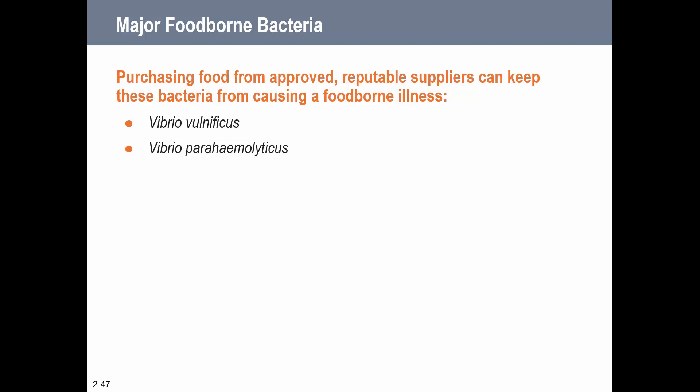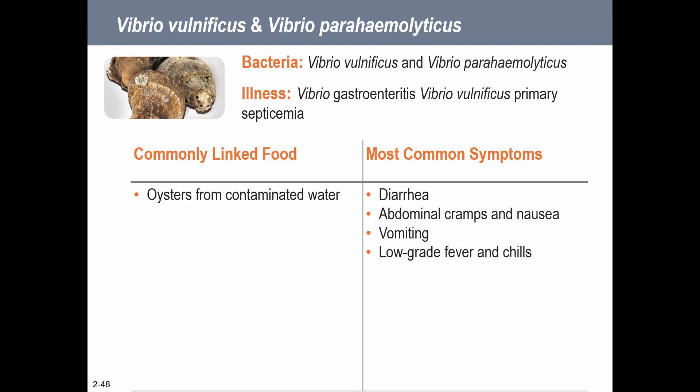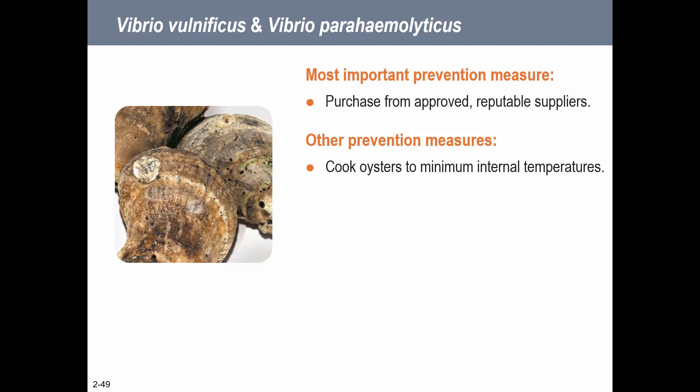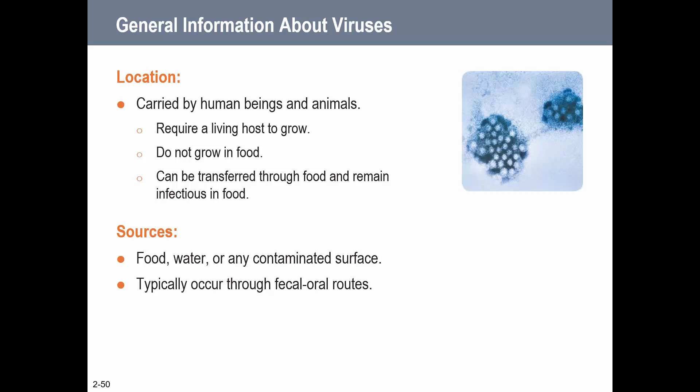The Vibrio bacteria are ones where purchasing from approved reputable suppliers is most important. Both vibrio types are often found in oysters from contaminated water - the seafood may have been caught from contaminated water and we can't tell by looking at it. Approved reputable suppliers and cooking to minimum internal temperatures are key, though oysters are often served raw, so good suppliers are essential. That's the whirlwind of bacteria - hopefully that's helpful.